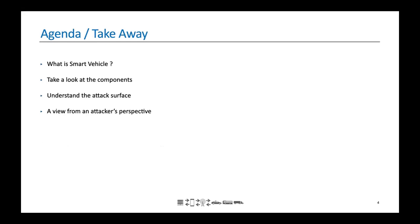The agenda for this talk is for us to understand what a smart vehicle is, take a quick look at the various components that go into a smart vehicle solution, and also understand the attack surface that is open or unique to a smart vehicle solution. We'll also look at the various attack vectors from an attacker's perspective. Quick disclaimer: the content in these slides are purely our view and we do not represent our employer. We may also refer to a bunch of tools and hardware as well as software utilities here as a reference for illustrative purposes and we do not endorse them.